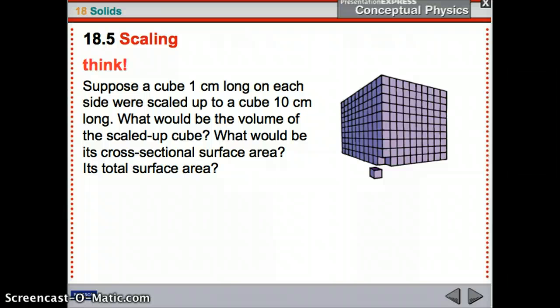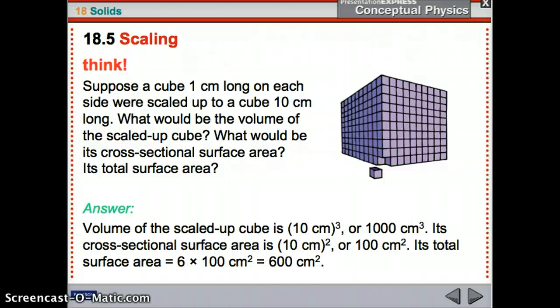So, we have a cube, 1 centimeter by 1 centimeter by 1 centimeter. We make it 10 by 10 by 10. What's the volume? What's the cross-sectional surface area? And what is its total surface area? Volume goes up by 10 cubed. So, it is 1,000 times 1 gives us 1,000 centimeters cubed. The cross-sectional surface area goes up by 10 squared, which is 100. So, 100 times the original one was 1. So, now it's 100. And then the total surface area, there are six sides to a cube. So, you take the cross-section and multiply by 6. That's all it is.